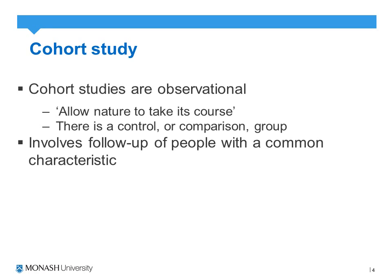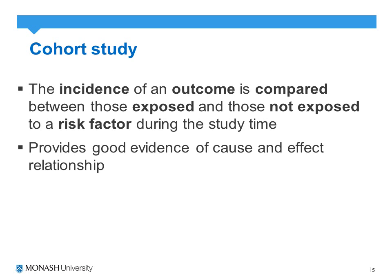Cohort studies, unlike randomised control trials, are observational studies — that is, they allow nature to take its course. They do have a control or comparison group and follow up people with a common characteristic. The incidence of a particular outcome is compared between those exposed and those not exposed to a particular risk factor during the study time, much like a randomised control trial, providing good evidence of a cause and effect relationship between exposure and outcome.